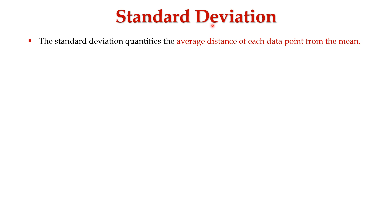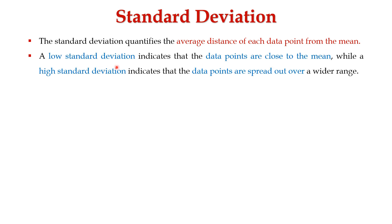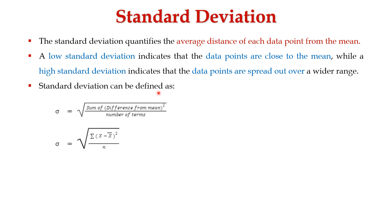Now let's learn about standard deviation. Standard deviation quantifies the average distance of each data point from the mean. A low standard deviation indicates that data points are close to the mean, while a high standard deviation indicates they are spread out over a wide range. Standard deviation sigma is defined as the square root of the summation of (x minus x-bar) squared divided by n.